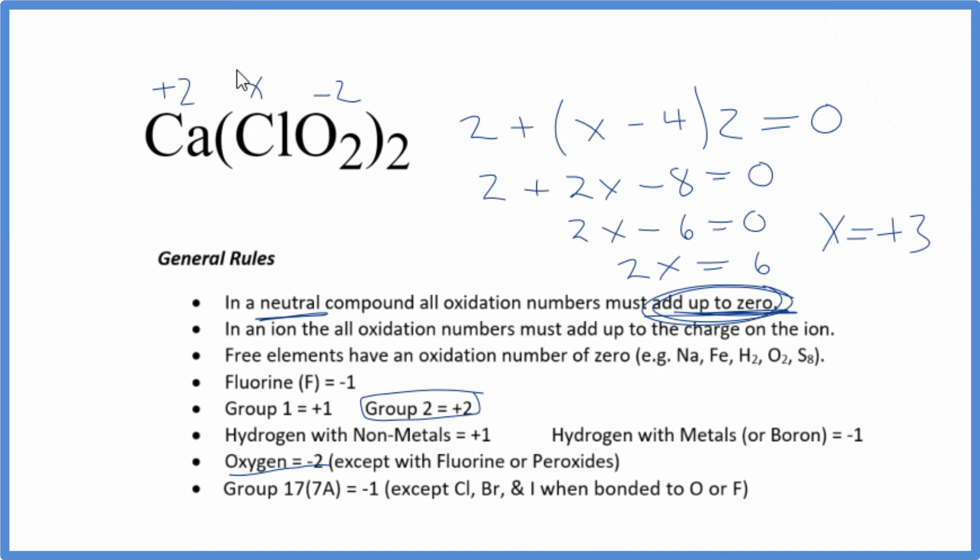So the oxidation number for the chlorine here will be plus three, and that's each chlorine. We have two chlorines. If you add up the oxidation numbers for all the elements, you will get zero.